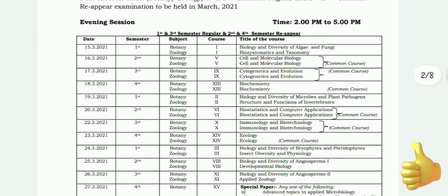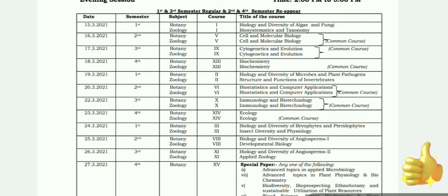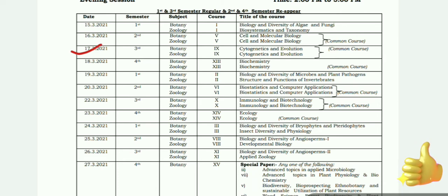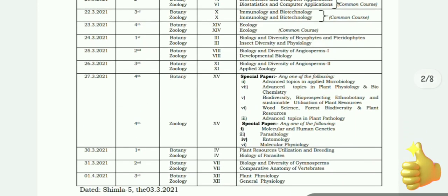Now discussing the third semester — and for reappeared students, the second and fourth semester. The first exam is on the 17th covering Cytogenetics and Evolution for both Botany and Zoology. The next exam on the 22nd covers Immunology and Biotechnology, which is the same course for both Botany and Zoology.